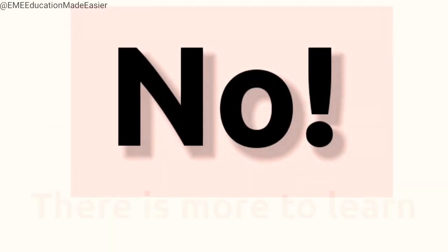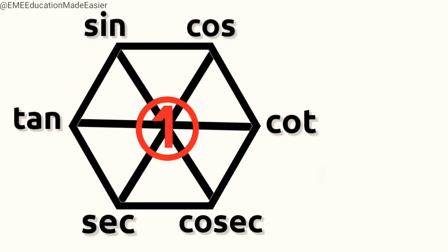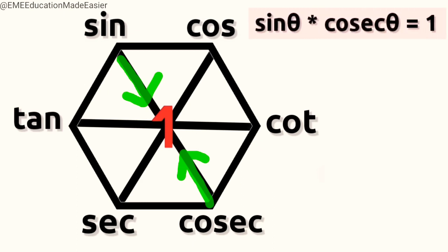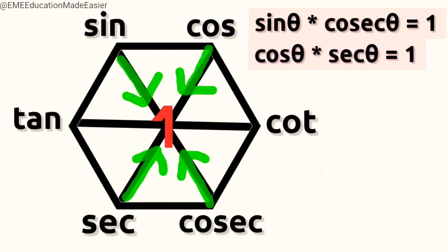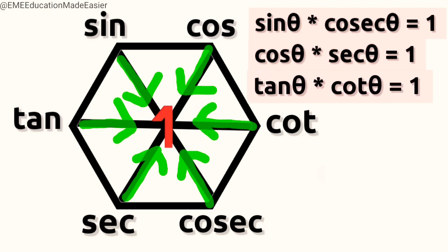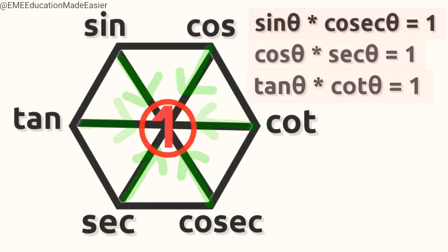Is that all? No, there's more to learn. We draw the super hexagon with one at the center. In the previous set of formulae, we did not use the one written at the center. Let's see why it is placed there. If we multiply the functions at the opposite vertices, we get one. Like sin theta multiplied by cosec theta equals one; cos theta multiplied by sec theta equals one; tan theta multiplied by cot theta equals one. So functions at diagonally opposite vertices multiply to give one.